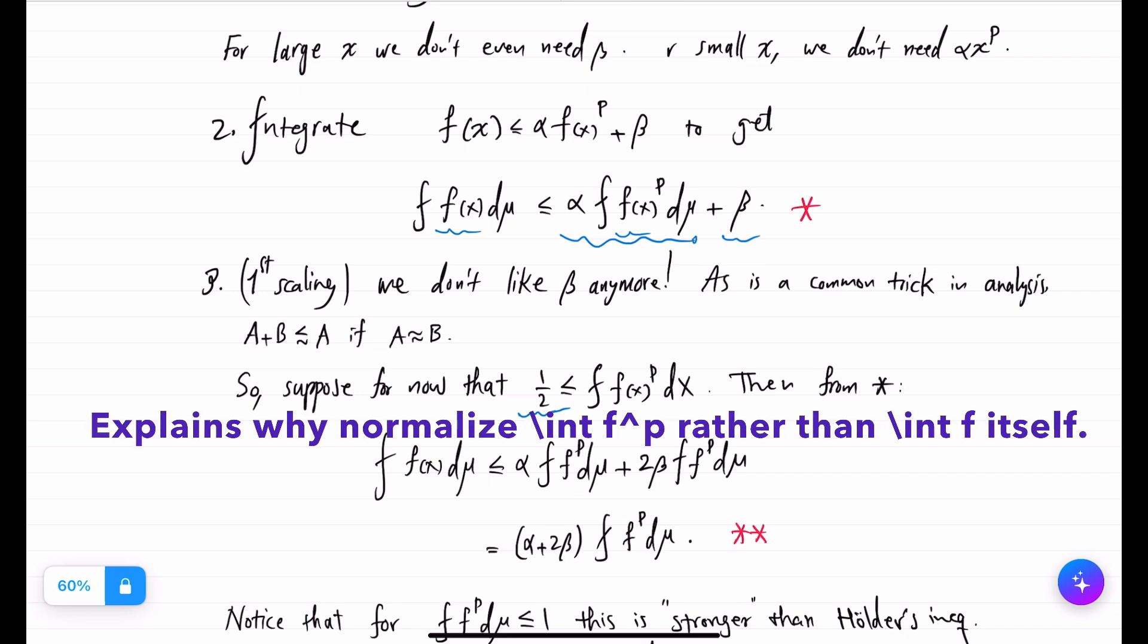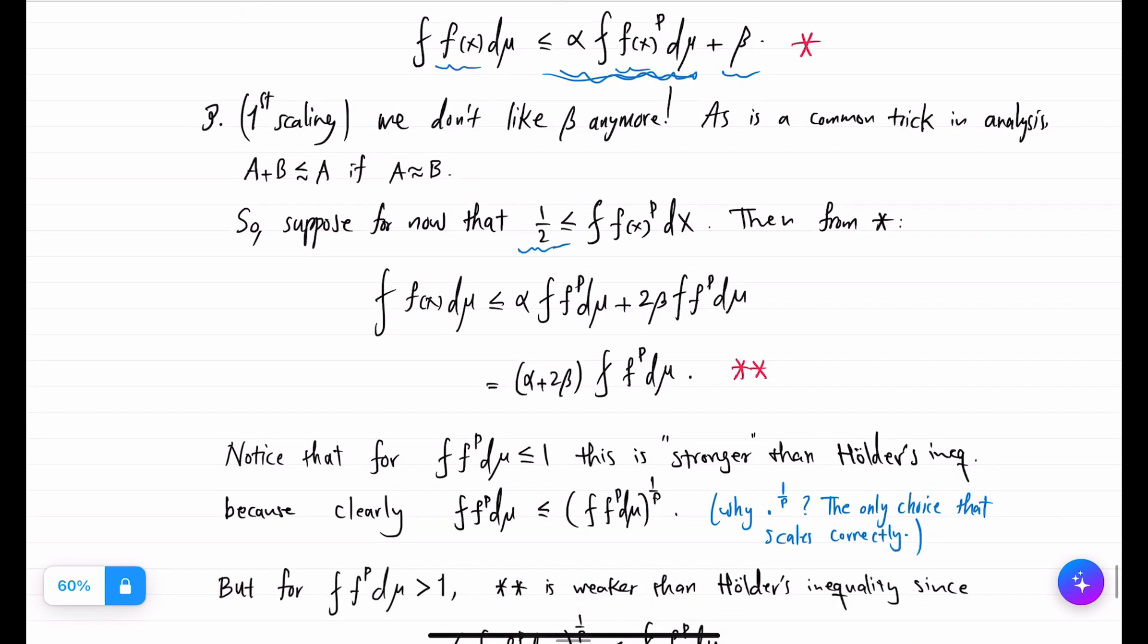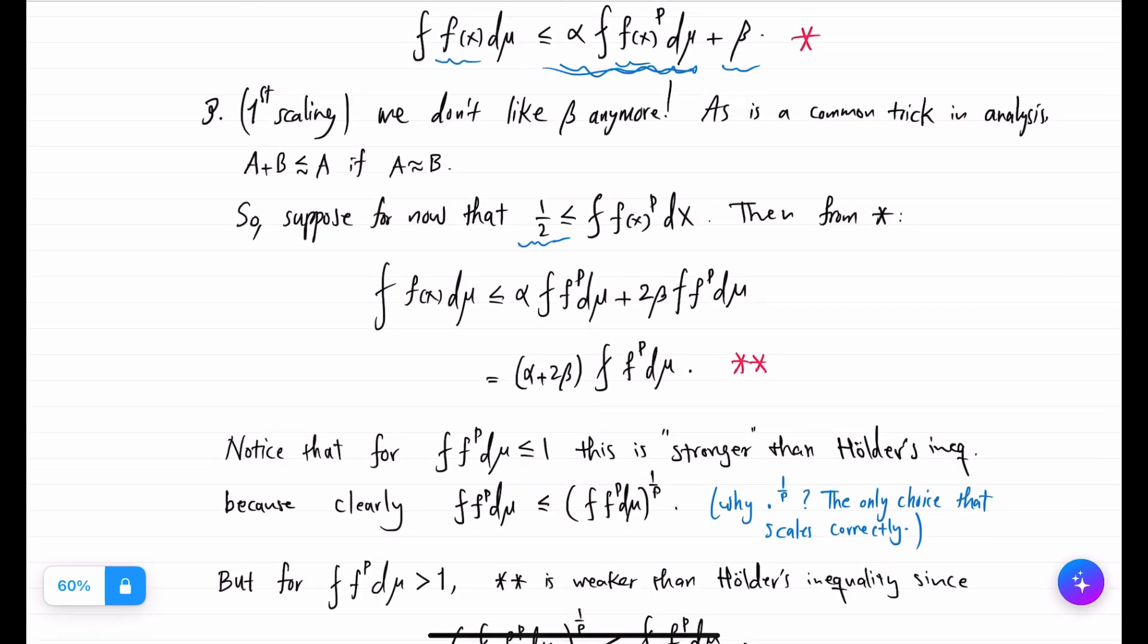In that case this term and this term are comparable. This is a constant and this is not too small. And when we write out the inequality in precision we get double star. So integral of f is bounded by integral of f to the p up to this constant α plus 2β.